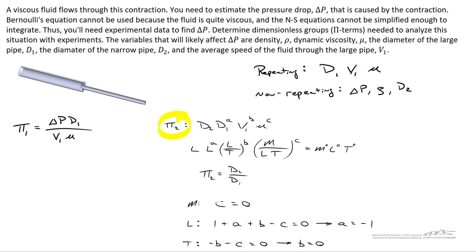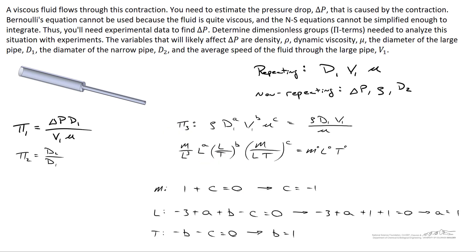Using a similar approach for pi two, we arrive at pi two equals D2 over D1 — the ratio of the diameters — which is meters over meters, also dimensionless. For pi three, using the same repeating variables and going through the same process, we find that pi three equals rho times the diameter of the larger pipe multiplied by its velocity divided by its dynamic viscosity. You might recognize this as the Reynolds number. So based on our selection of repeating variables D1, V1, and mu, one of the dimensionless quantities is the Reynolds number.